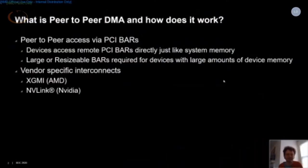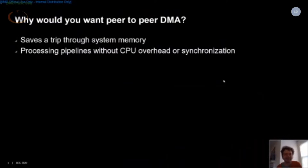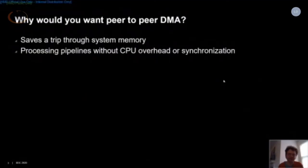Why would you want to do peer-to-peer DMA? Well, it obviously saves a trip through system memory if you don't need it, and you can build pipelines without any CPU overhead or synchronization. For example, you can kick off an operation on the GPU, it processes some data, and once done it can via a peer-to-peer transaction hit a doorbell in another device's BAR — like an RDMA controller — and transfer that data to another node in a network, all without any CPU interaction.